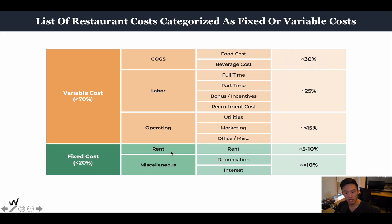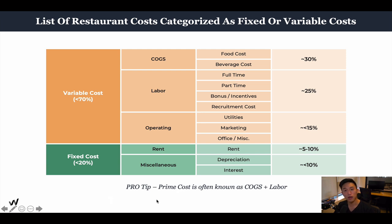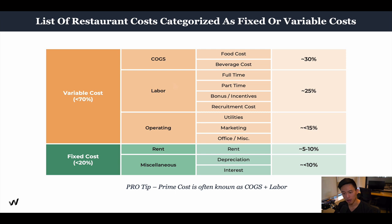For fixed costs, there's rent and miscellaneous. Rent should account for five to 10% of your revenue. Miscellaneous — depreciation and interest you'd be paying on loans — should not account for more than 10%. A pro tip: in the industry, prime cost stands for cost of goods sold plus labor. These two added together is your prime cost, and typically that's 55 to 70% of your costs.